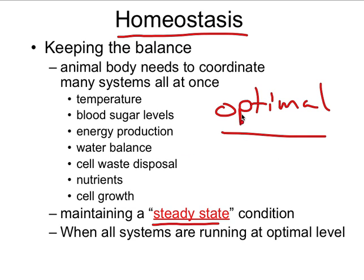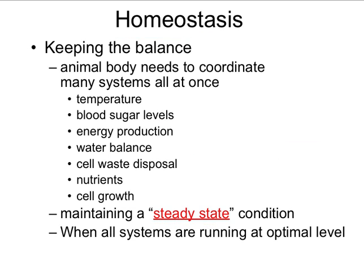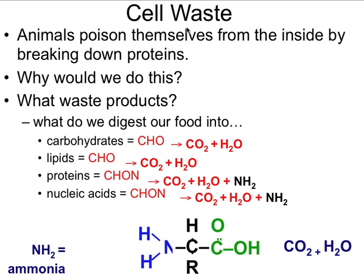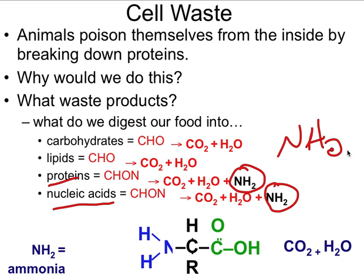Our cells make waste constantly through different chemical reactions, and we need to get rid of those waste products. The biggest culprit is breaking down proteins and nucleic acids, which produces nitrogenous waste — nitrogen and a couple of hydrogens attached to an amino group. We have to get rid of those because they can be pretty bad news.